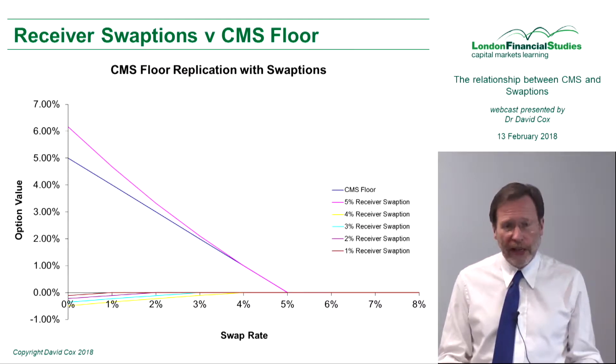You'll see an at-the-money receiver swaption gives you a payoff, which of course is convex in the opposite direction to the payer swaption, the DV01 increasing as rates rally, as rates come down. So if we're going long a CMS floor, we go long a receiver swaption at the money and short a series of out-of-the-money receiver swaptions. And we do an increasing number of out-of-the-money receiver swaptions to fill the gap.